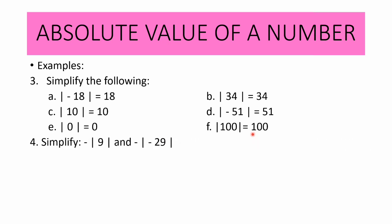Now let us have more examples: negative absolute value of 9, and negative absolute value of negative 29. The negative sign outside the absolute value means you are getting the opposite value of the number. So we have negative absolute value of 9. First, get the absolute value of 9, which is 9. Then get the opposite of 9, so it is equal to negative 9.